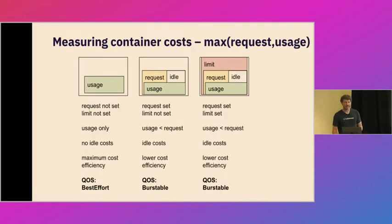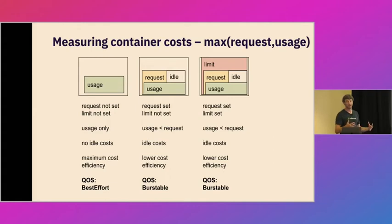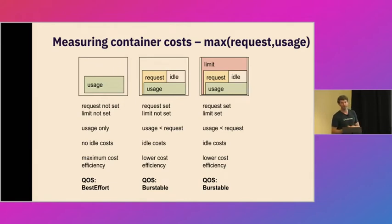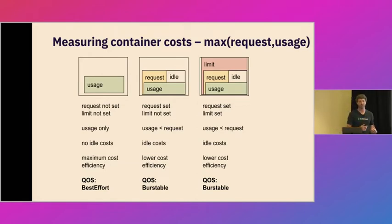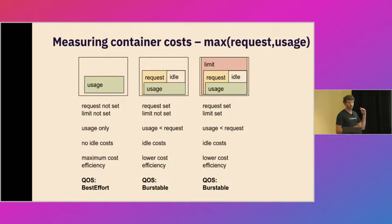The other really important equation to answer is: what is the cost of each container running in the environment? We just talked about the cluster level — the macro cost of everything running in your ecosystem. This is then going all the way down to the bottom and looking at each individual container. Here the OpenCost spec strongly recommends taking into account both the Kubernetes request as well as usage. Let's walk through a couple examples.